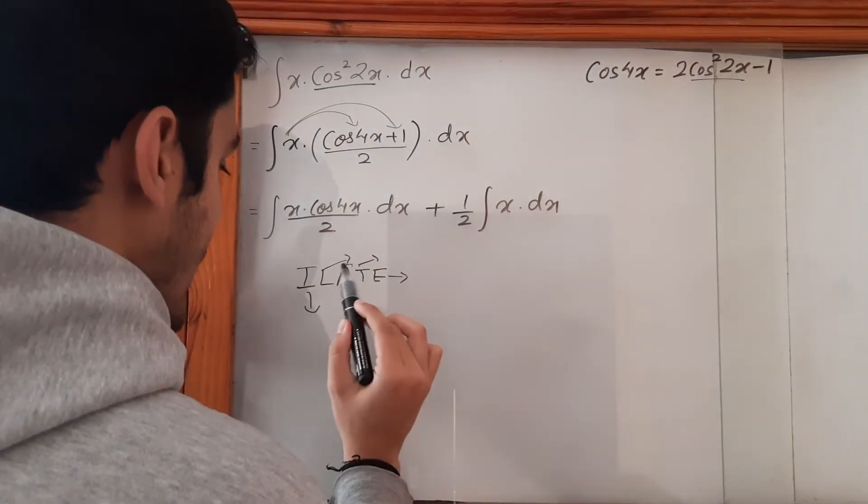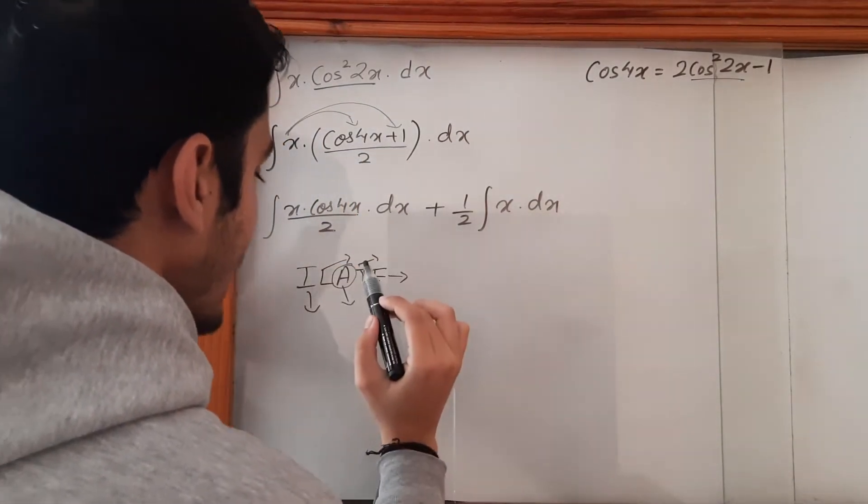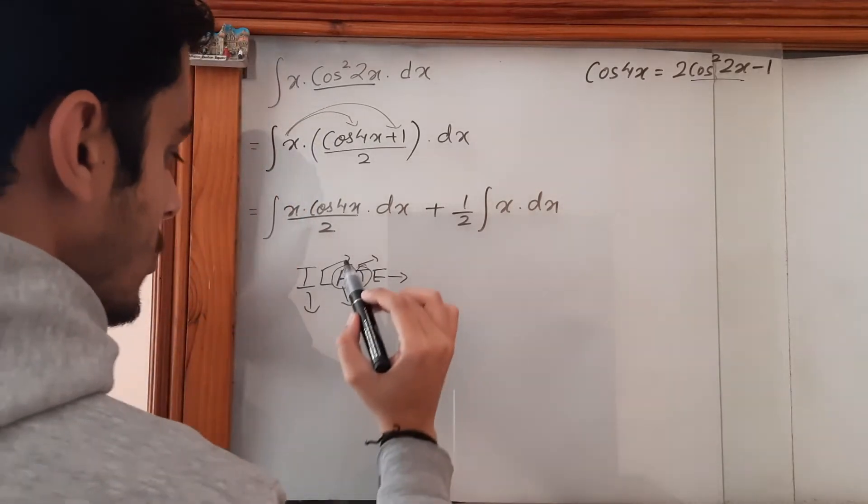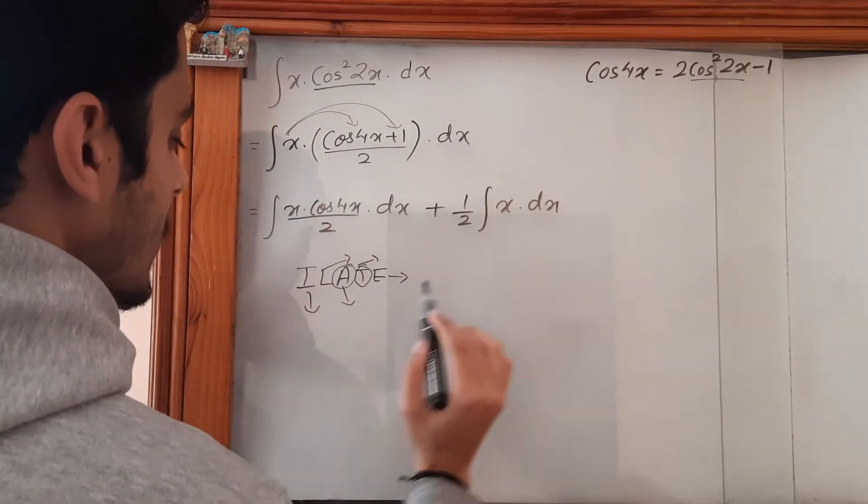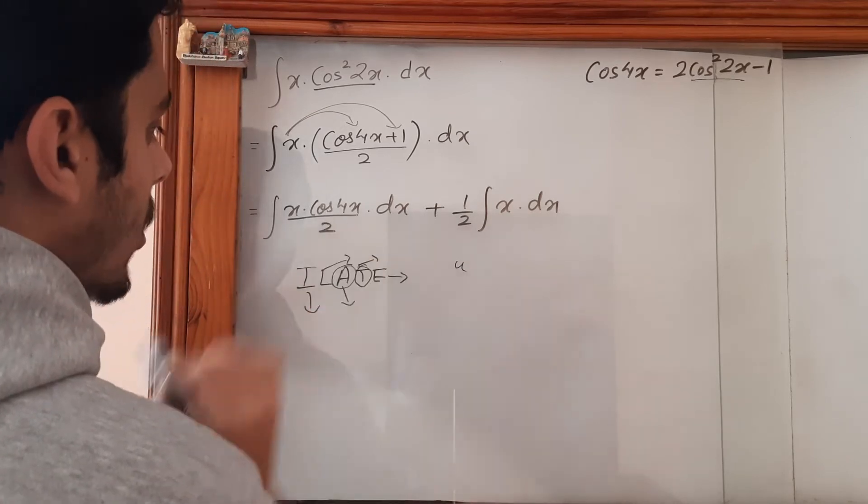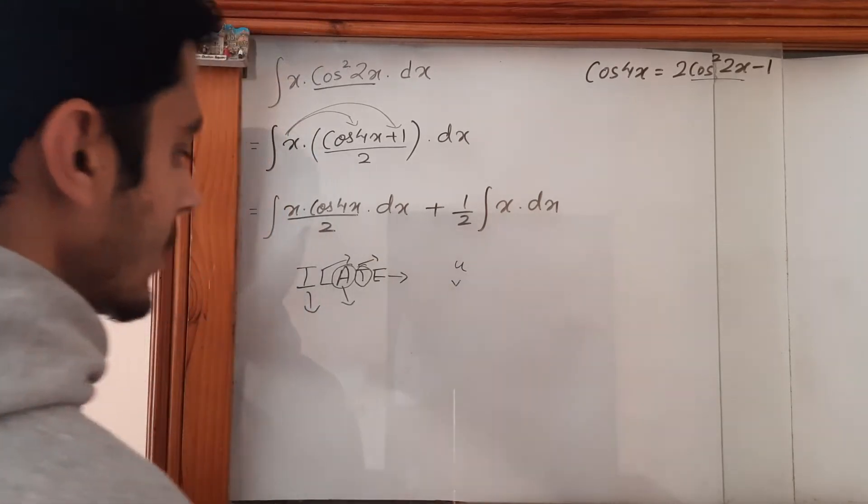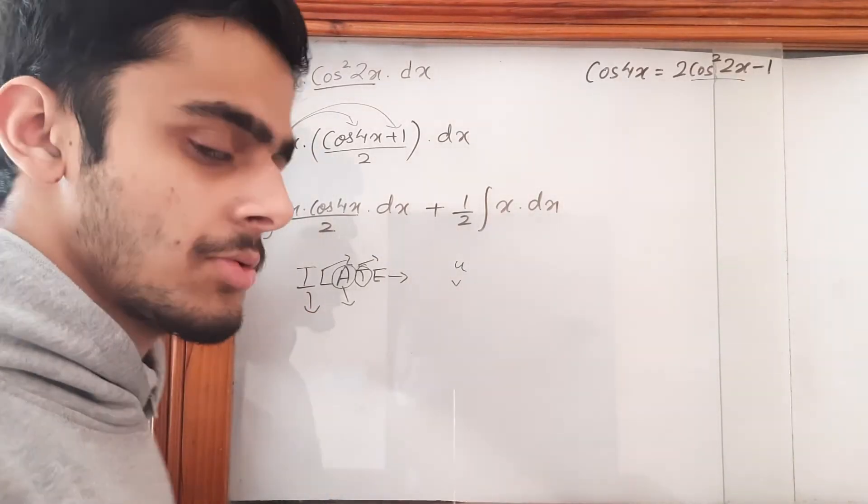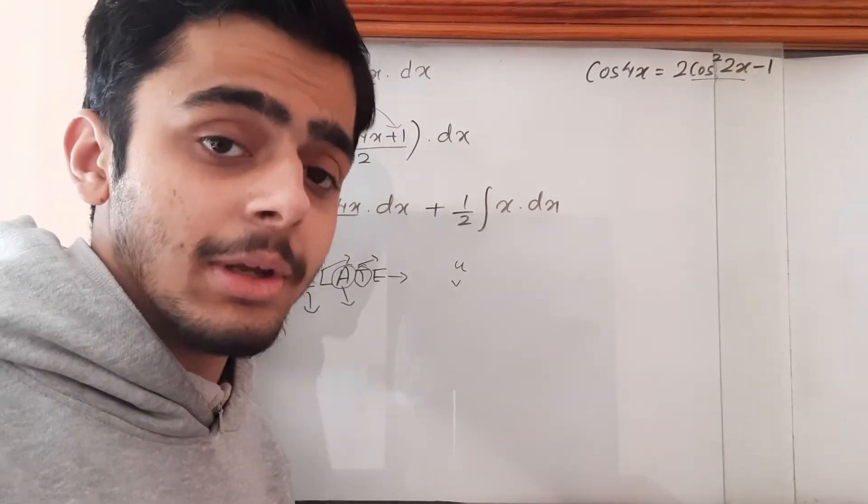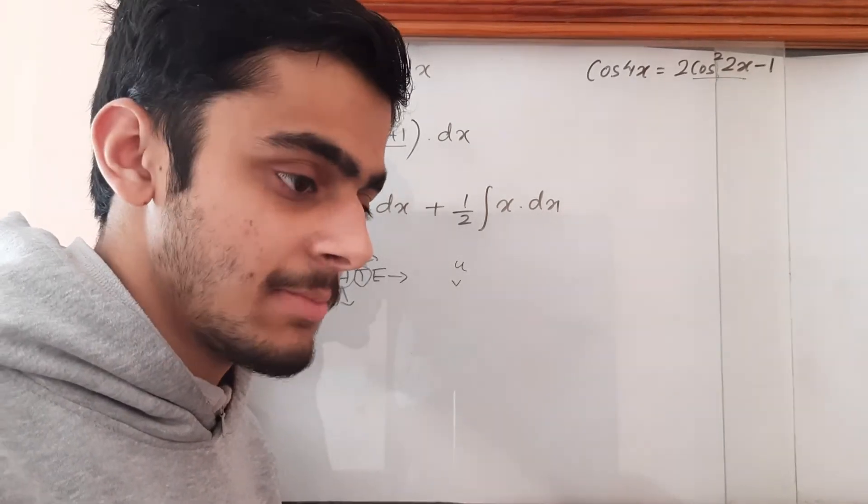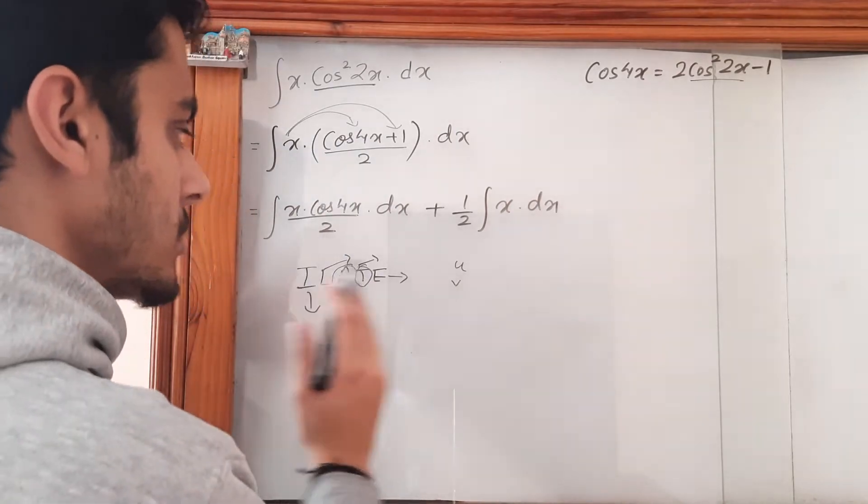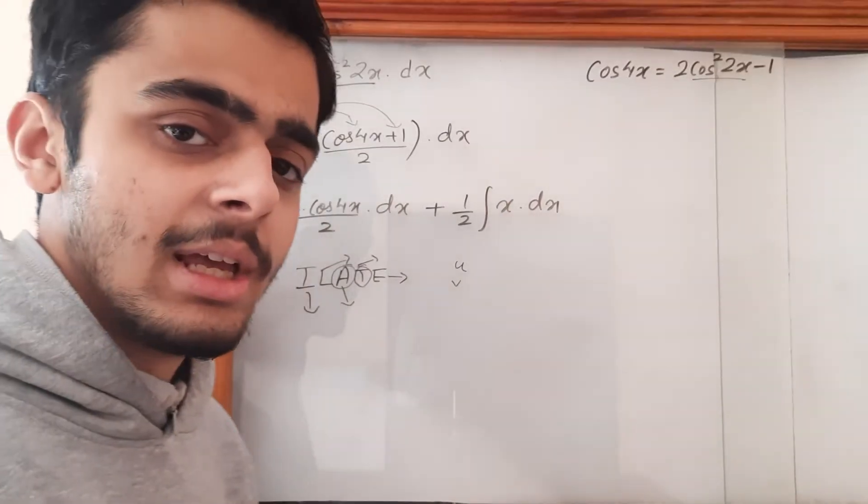So x is algebraic and cos(4x) is trigonometric. Let's suppose x to be u and cos(4x) to be v. Even if you don't follow this rule, you are going to get the answer, but it may be a little complicated. So this rule makes the solving process easier.